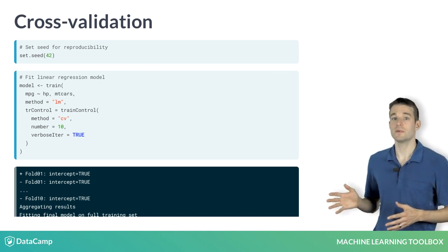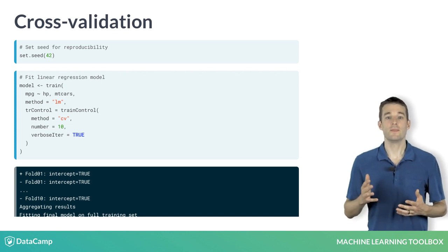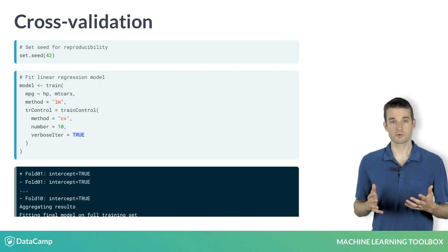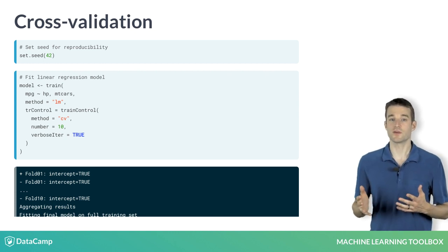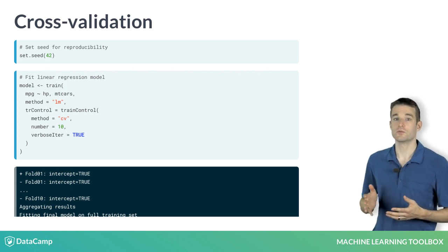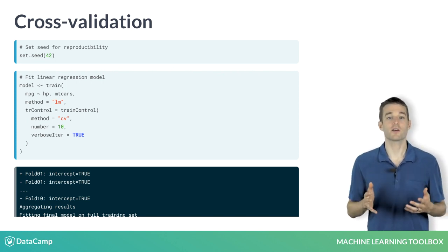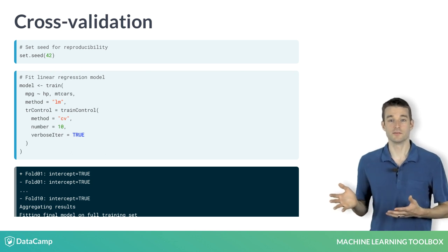The trControl argument controls the parameters caret uses for cross-validation. In this course, we will mostly use tenfold cross-validation, but this flexible function supports many other cross-validation schemes. Additionally, we provide the verbose iter equals true argument, which gives us a progress log as the model is being fit, and lets us know if we have time to get coffee while the models run.